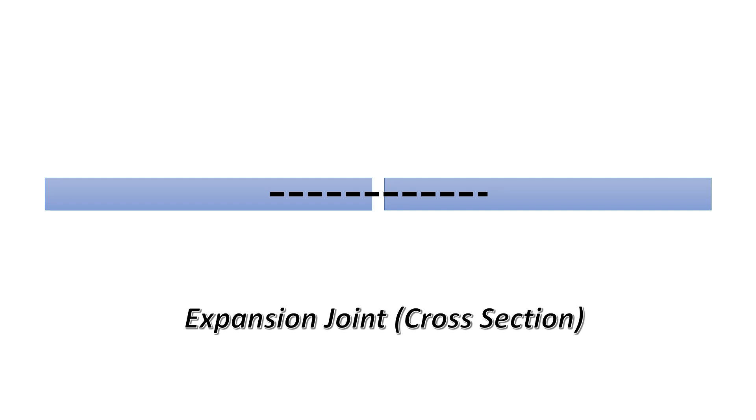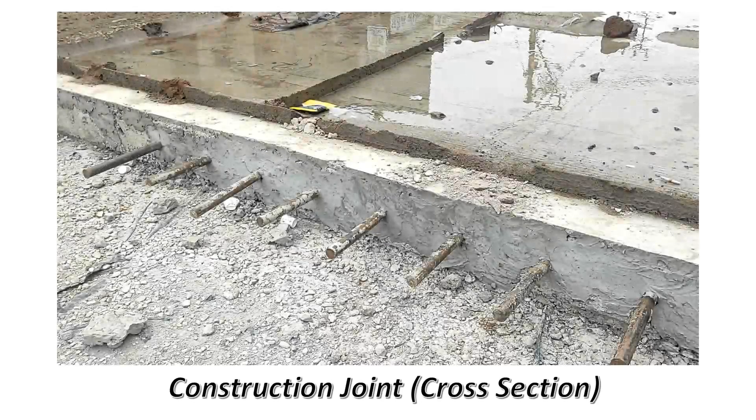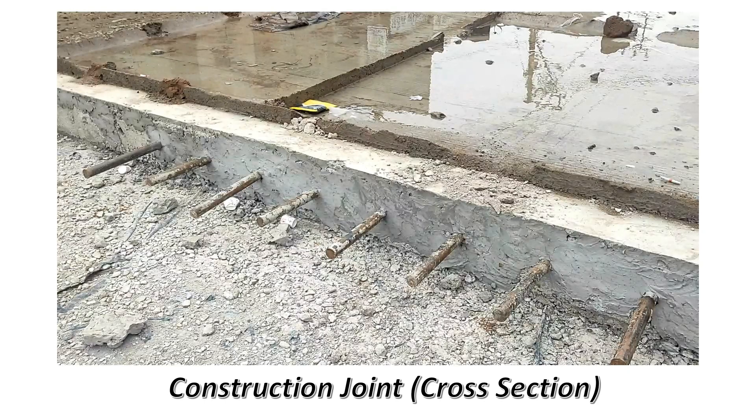The last is construction joints. During the construction of rigid pavements, if the concreting work is stopped at the end of the day or suspended due to any other reason, a construction joint is formed. As the construction joints are formed as through joints across the full depth of the slab, it is necessary to provide suitably designed dowel bars for load transfer as seen here.